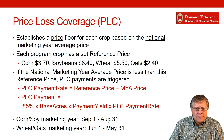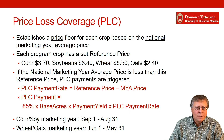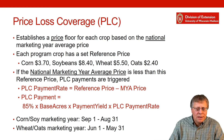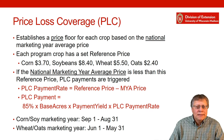The PLC payment rate is the reference price minus the marketing year average price. If the marketing year average price is below the reference price, the PLC payment rate will be positive. The PLC payment is then calculated as 85% times the base acres on that farm, times the payment yield for that farm, times that payment rate.